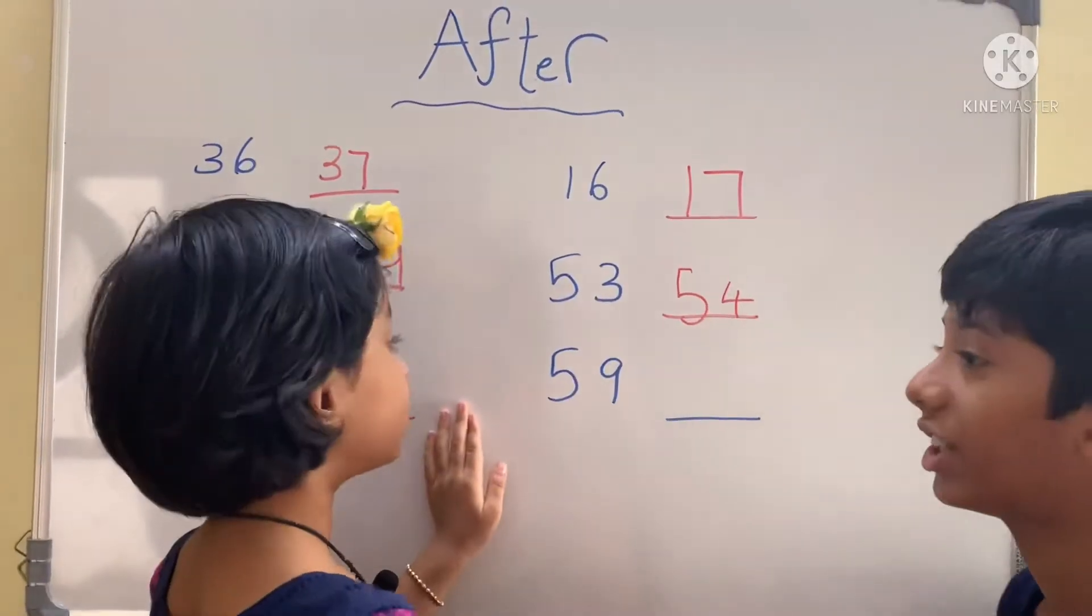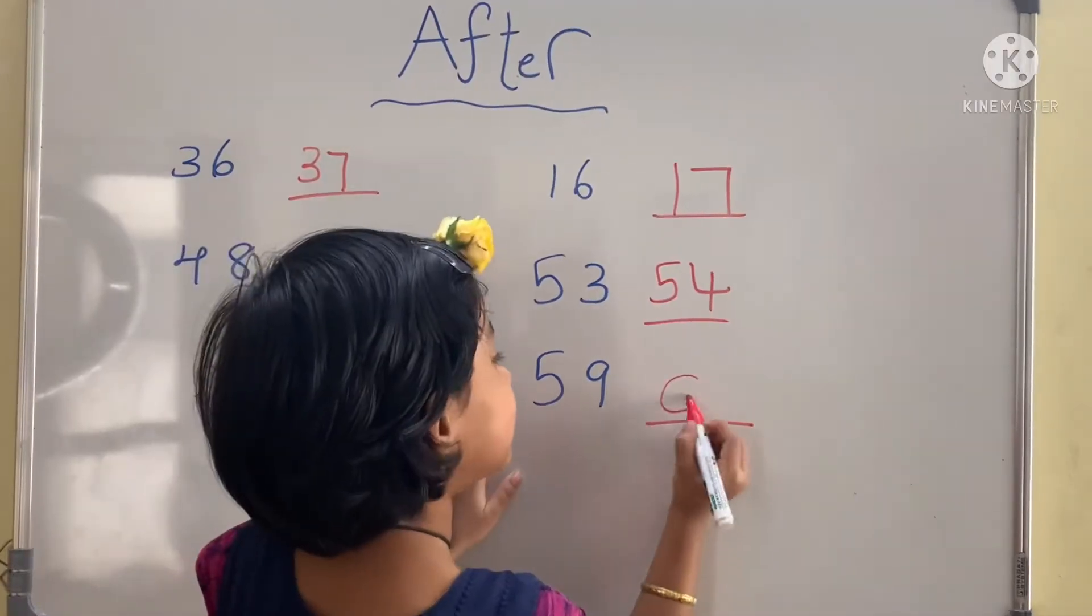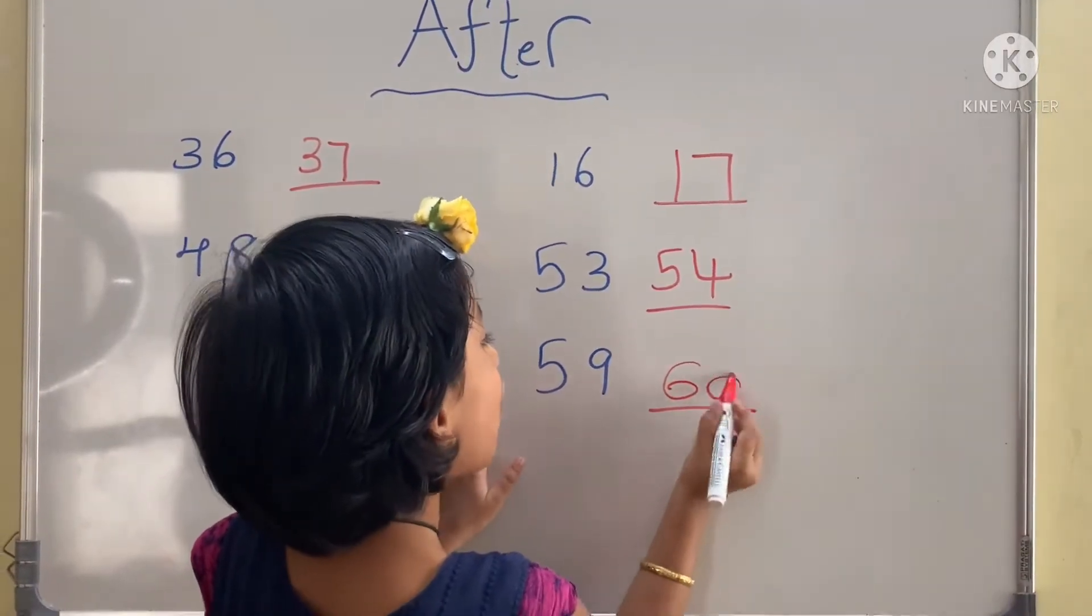What number comes after 59? Six tens, zero ones, 60.